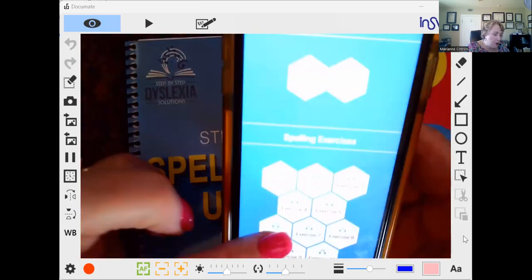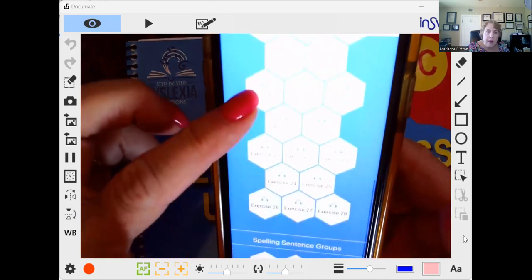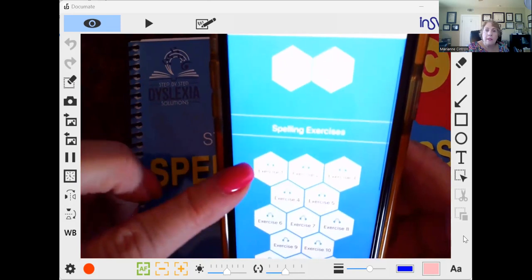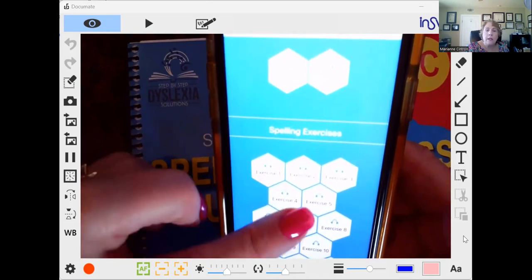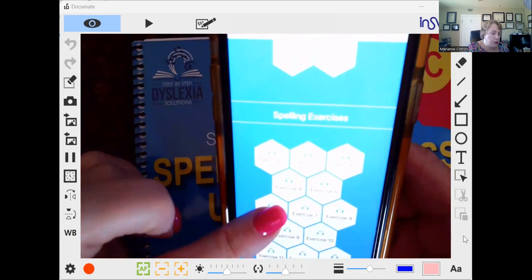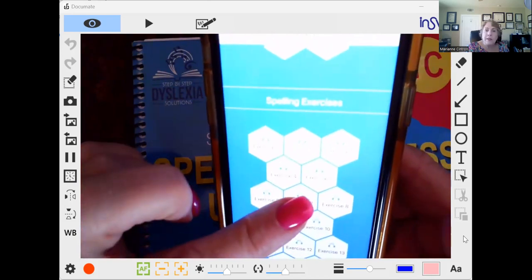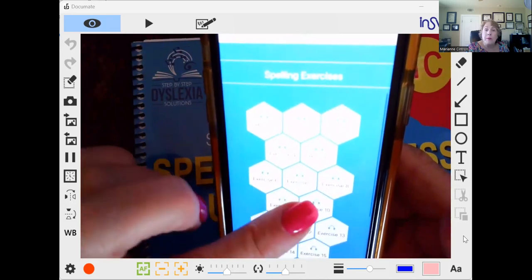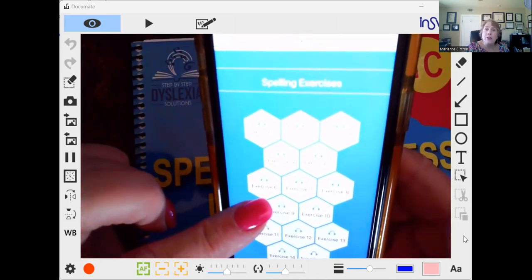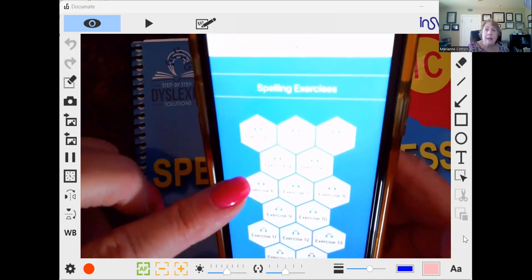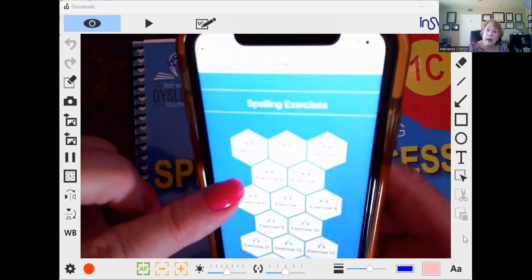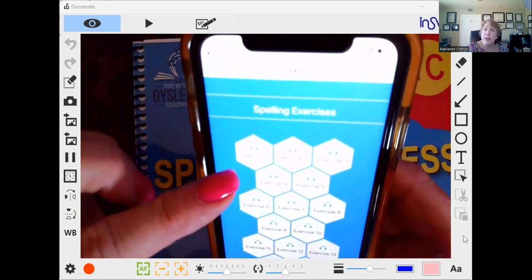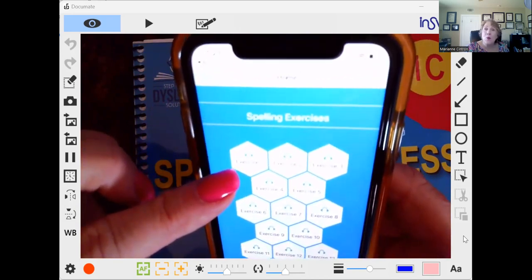So I have 28 exercises here. And they vary from easy consonant vowel consonant words to four letter words to exercise five has two syllable words. So you can jump in the middle if your child is more advanced. Now, if your child has dyslexia and is in a remedial program, see how that remedial program is helping them. And the music in the left ear will only enhance what they're learning.